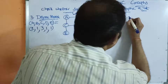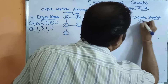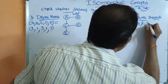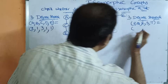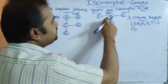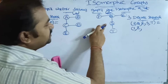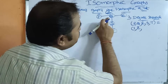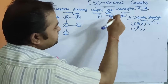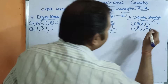Likewise, let us find out the degree sequence for graph two with vertices P, Q, R, S, T. Degree of P is one. Degree of Q is three (edges QP, QR, QS). Degree of R is one. Degree of S is two (edges SQ, ST). Degree of T is one.